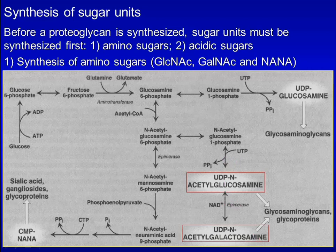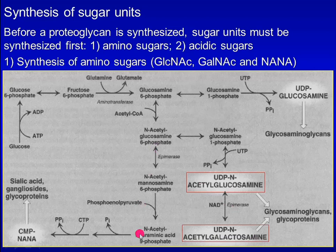From the same N-acetylglucosamine-6-phosphate, epimerization at the C2 position leads to N-acetylmannosamine-6-phosphate, which reacts with phosphoenolpyruvate, producing N-acetylneuraminic acid-9-phosphate. Finally, monophosphate nucleoside CMP is added, giving rise to CMP-NANA.